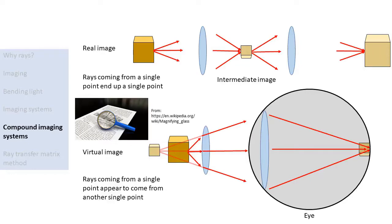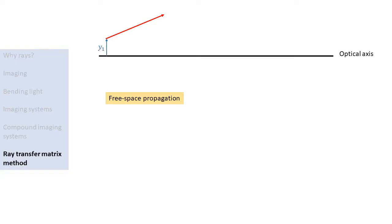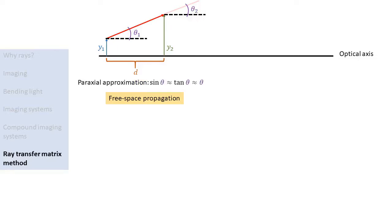To analyze imaging systems quantitatively, we can use the ray transfer matrix method. Let's first consider a ray freely propagating through space. We define an optical axis, which is the axis around which all optical elements are centered. Let's say the ray starts at a height y₁ from the optical axis and has an angle θ₁ with respect to the optical axis, and propagates a distance d along the optical axis. To simplify calculations, we make the paraxial approximation, which assumes we only consider rays with small angles with respect to the optical axis. We can then compute the new height and angle of the ray, and these equations can be written using matrix notation — the resulting ray transfer matrix describes free space propagation for a distance d.